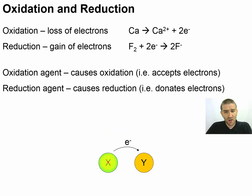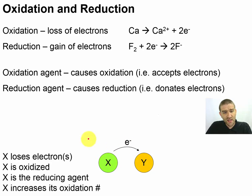If we have a transfer like this going on, where something has lost electrons to another atom, X is going to lose electrons. If it lost electrons, it is being oxidized. That means it is the reducing agent, and it's going to increase its oxidation number.